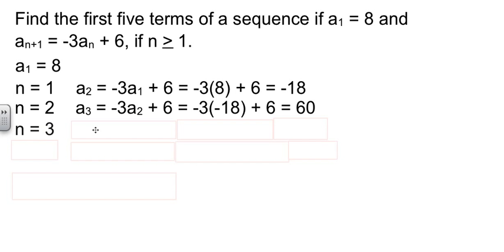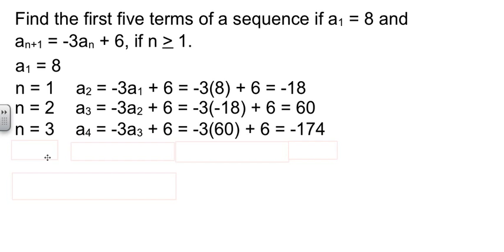If n is 3, we can find a₄. a₄ would be negative 3 times a₃, plus 6. We know what a₃ is. So now we have a₄.